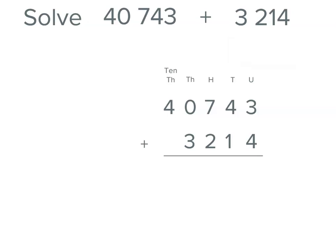Now, let's start adding. Now, we always start from the far right. And this means we're going to start with our units, three and four. So three plus four is seven.